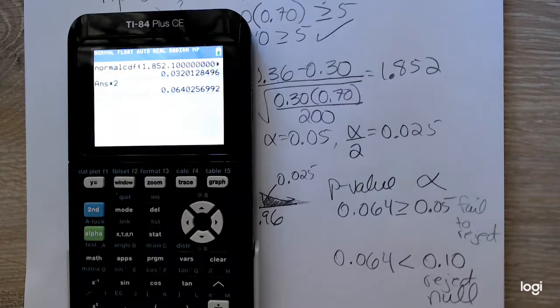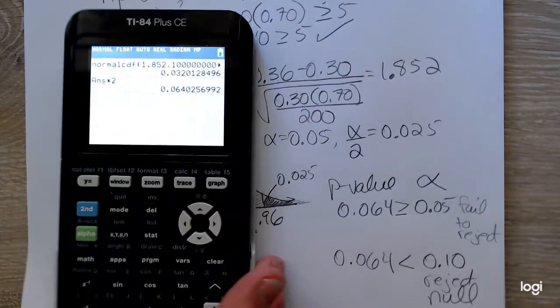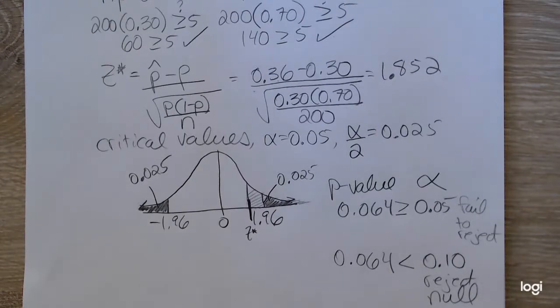So it is possible to fail to reject at one level of significance and reject at another.